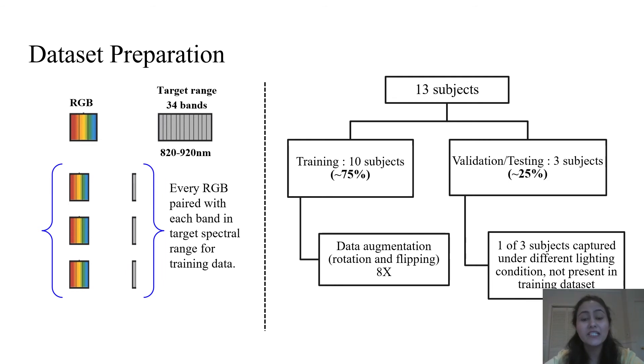To train and test our deep learning model, we divide the collected data into two parts, 75% for training and 25% for validation and testing. In addition, to stress the robustness of our model, the data used in validation and testing comes from different human subjects that were not seen during training. Out of total 13 human subjects, we use the data of 10 for training and remaining three for validation and testing. One of these three subjects was captured under a different lighting condition which is not present in training dataset. We further increase the training dataset by using augmentation techniques, for example, rotation and flipping.